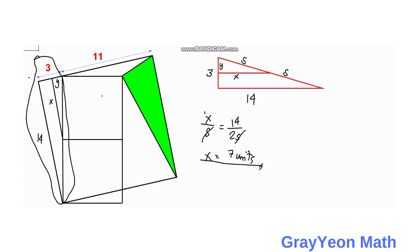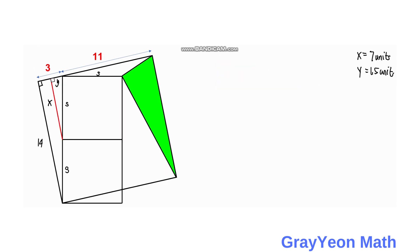For the value of y, we have y over s equals 3 over 2s, and we can again cancel s, giving us y is equal to 1.5 units.